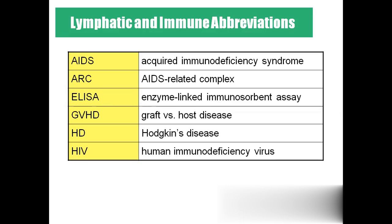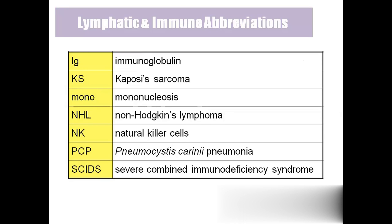HIV — human immunodeficiency virus. IG — immunoglobulin. KS — Kaposi's sarcoma, which is skin cancer in AIDS patients. Mono — mononucleosis. NHL — non-Hodgkin's lymphoma, which is cancer of the lymph gland.